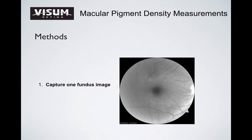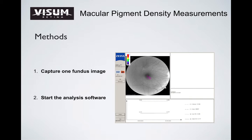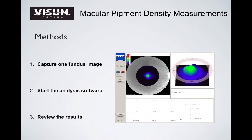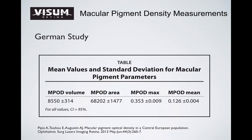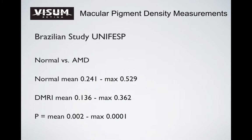To perform the exam, three simple steps should be taken: first, you take the picture with the fundus camera; second, you start the analysis software; and third, you review the results. The review map is composed of a 3D map on the top right, a 2D image in the center, and at the bottom, the values of the macular pigment density measurement. A study by Pipis and co-workers from Central Europe found an average macular pigment density of 0.1826, which differs from our own average values.